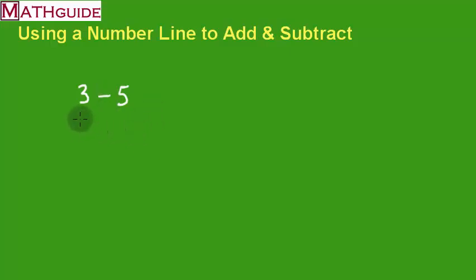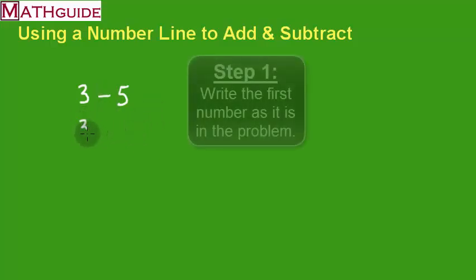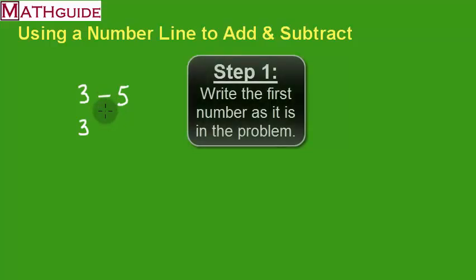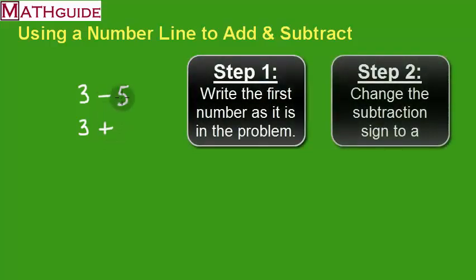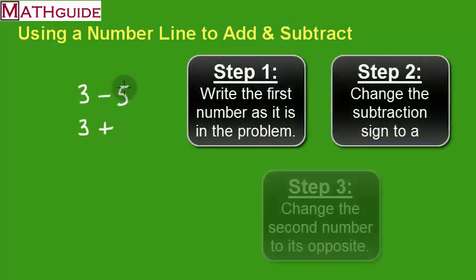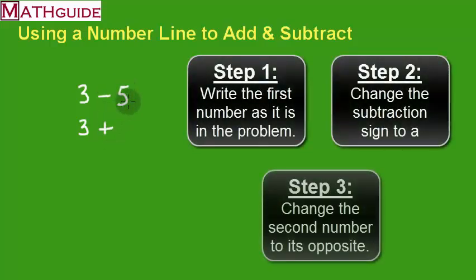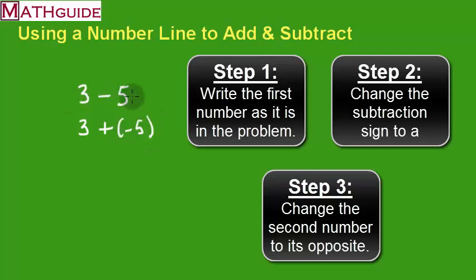For instance, you leave the first number alone, you change the sign to addition, and then instead of this being a five — because it's three minus five — it now becomes negative five. See how we took the opposite.